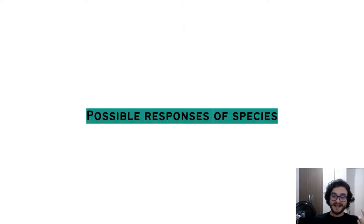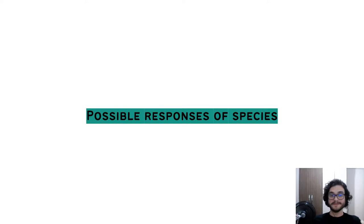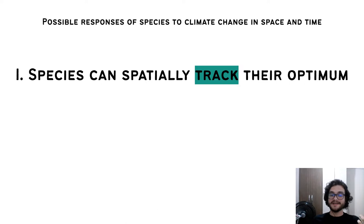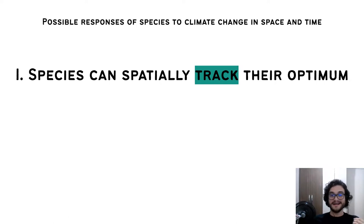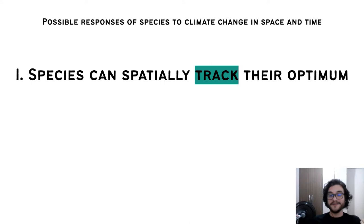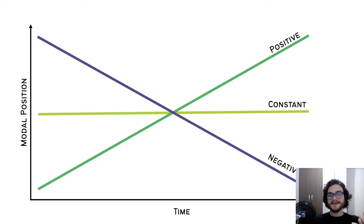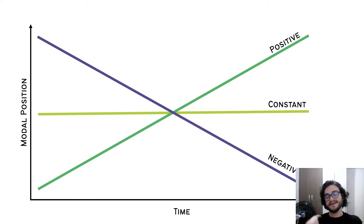How will species respond to that in space? Taking the latitudinal temperature gradient as an example, species can spatially track their optimum. Mostly those species that are vagile, like birds, they can chase those climatic optimum zones in which they can have higher abundances and higher fitness. So species that prefer colder regions might be moving northwards over time, while species that like hotter places may be moving southwards.